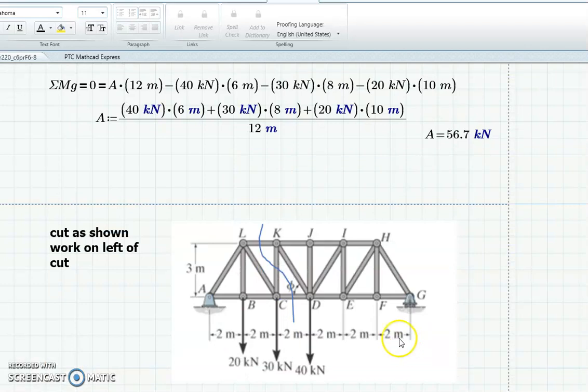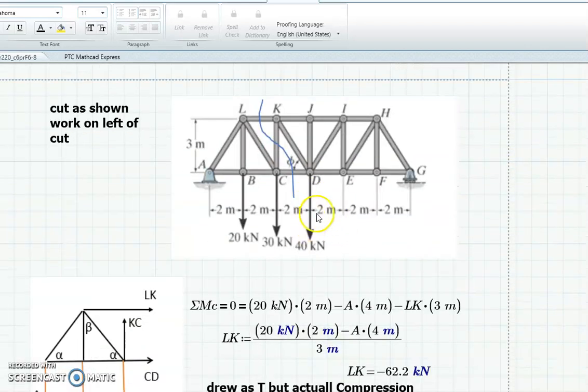So the key points, again, are making your cut, you can only go through things you don't know, only draw, decide which half you want to work on, and only draw the things that are on that cut. You can still use points off the cut to do your moments, but you can only use the forces on the cuts.